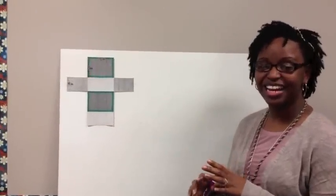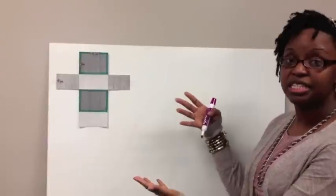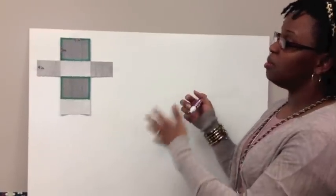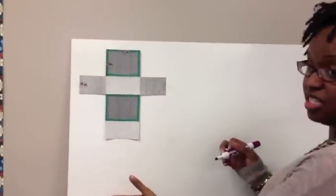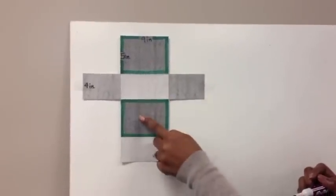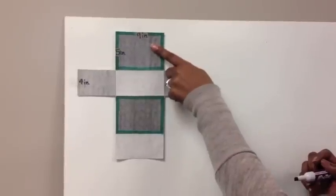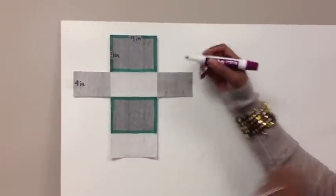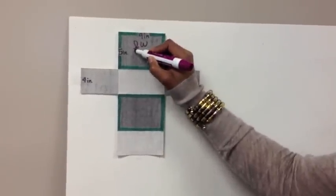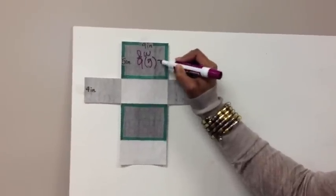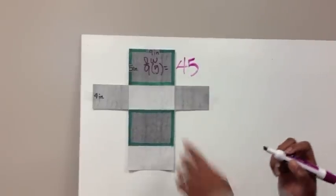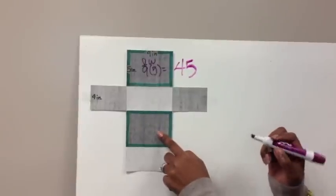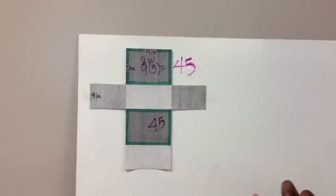Let's get to example one. You have the rectangular prism drawn there, and I've unfolded it so you can see the net of that figure. Surface area means we want the area of all the faces. I've identified the sides that are 9 by 5 as my bases — the top and the bottom. With a rectangle, the formula for area is length times width, so 9 times 5 is 45. The top and the bottom have the same area, so both of these would have an area of 45.